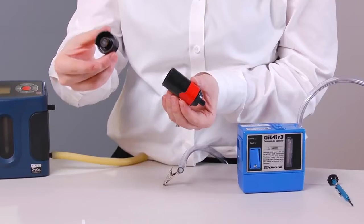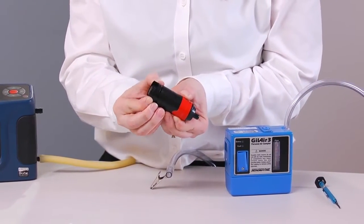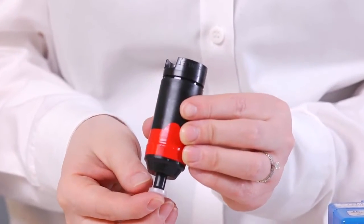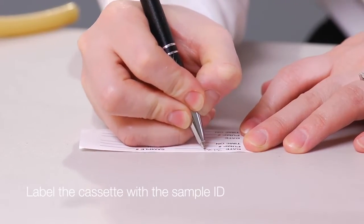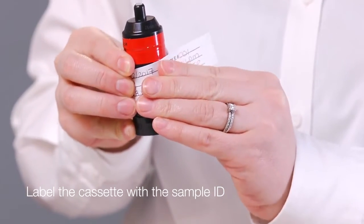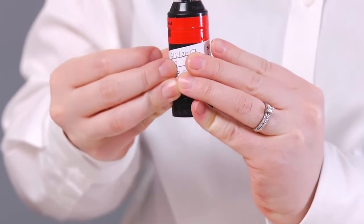Once sampling is complete, put the inlet cap on the cassette for an airtight seal. To finish, label the cassette with the sample ID. You can also add the sample's date, time, and location.